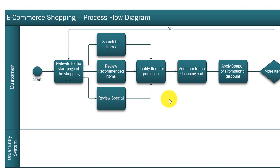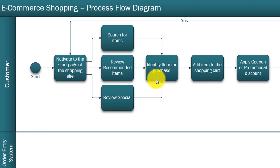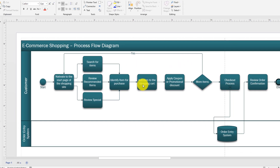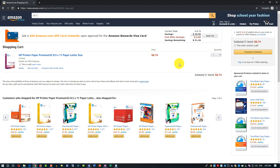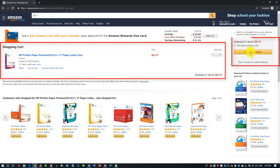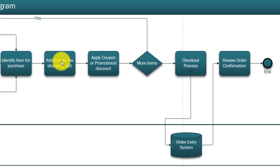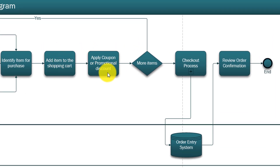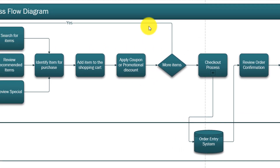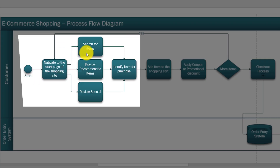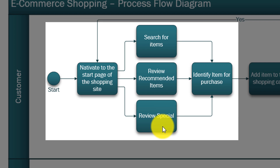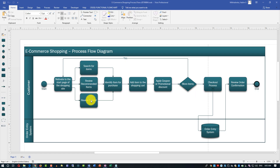Now let's look at how it's reflected in the process diagram. You have 'identify items for purchase,' which you can do through multiple different steps. Then you add these items into the shopping cart. Next, you go into the cart itself, and you're ready to do a checkout process. You go to the shopping cart, you can apply a promotion or discount, or you can go and get more items by returning back to shopping and going through the process again.